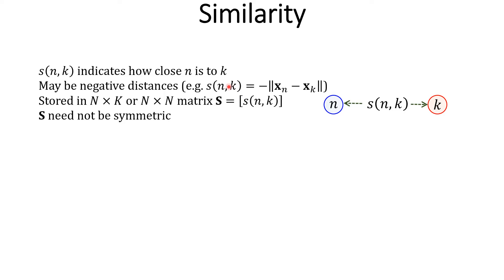In other words, S_nk may not be equal to S_kn. So distances can be replaced with any divergence.